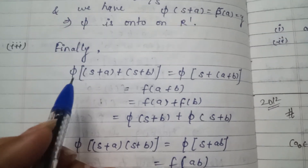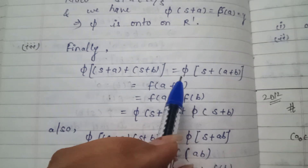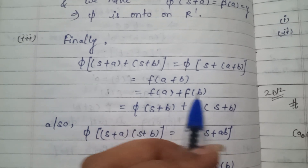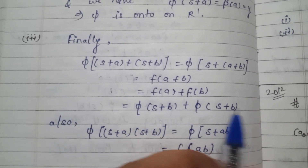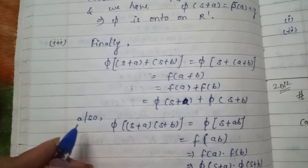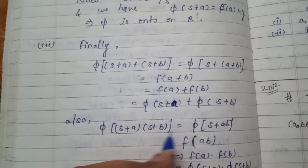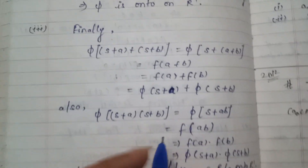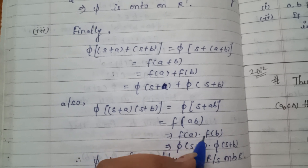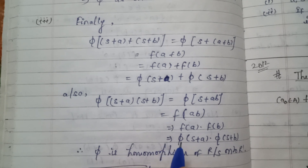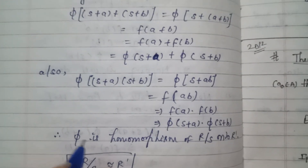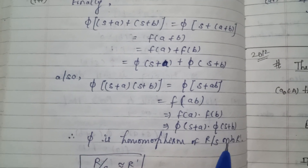Finally, phi((S+A) + (S+B)) = phi(S+(A+B)) = F(A+B) = F(A) + F(B) = phi(S+A) + phi(S+B). Also, phi((S+A)·(S+B)) = phi(S+AB) = F(AB) = F(A)·F(B) = phi(S+A)·phi(S+B). Therefore phi is a homomorphism of R/S onto R'.